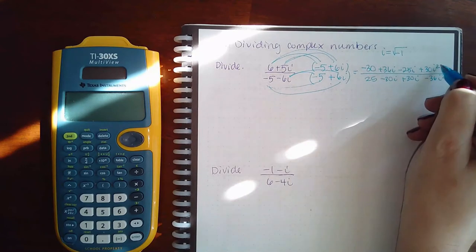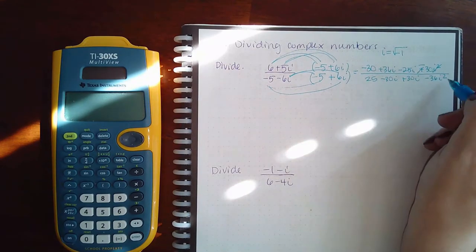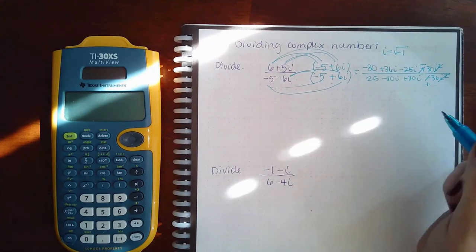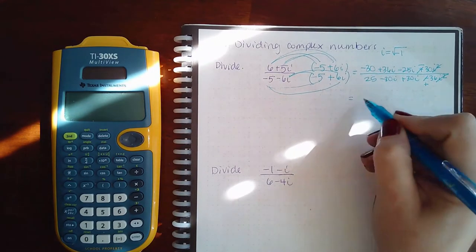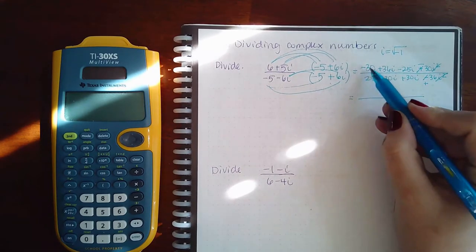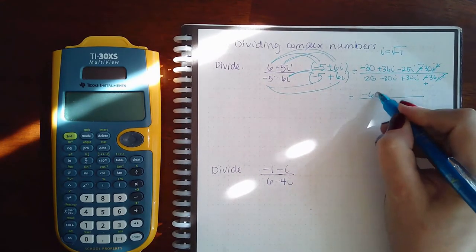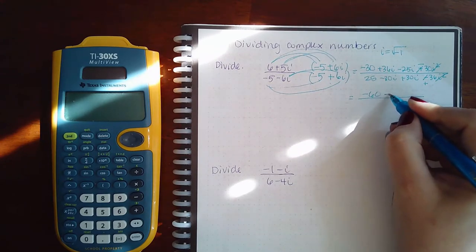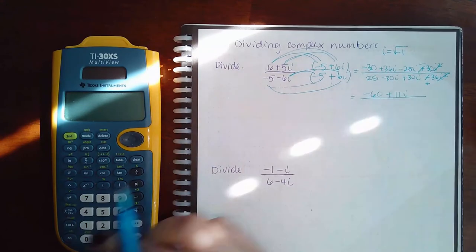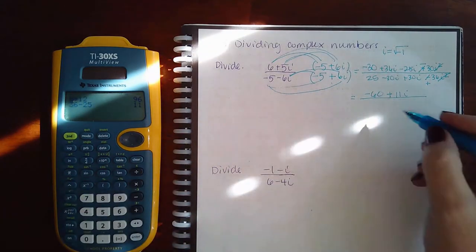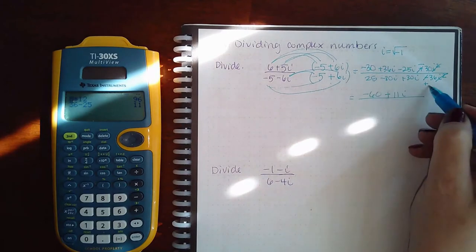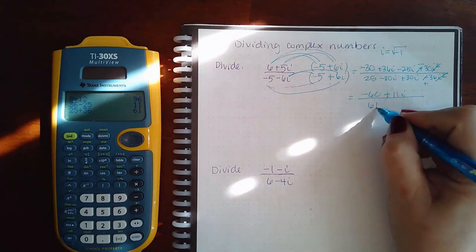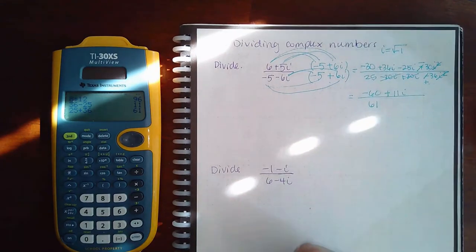So I know that this is going to change this into a negative. I know this is going to change this into a positive. So I'm going to combine my like terms. I get negative 30 minus 30, which is negative 60. And 36i minus 25i is going to be plus 11i. And then I have 25 plus 36, which is 61. These guys go away.